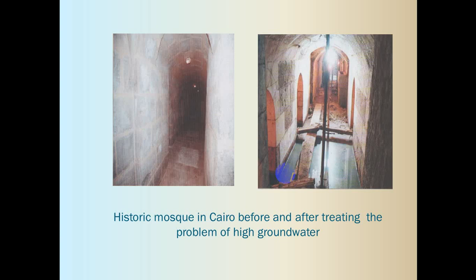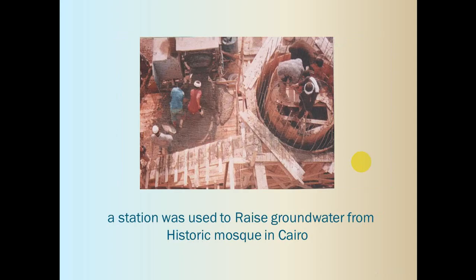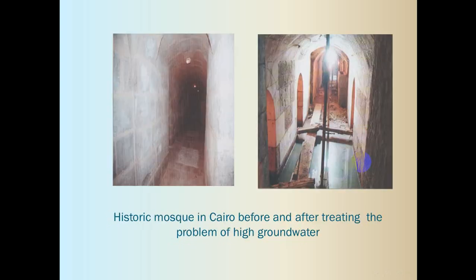Here this historical mosque was suffering from high groundwater inside it — you can see how the groundwater was covering parts of the building's floor. They performed a groundwater pumping operation to the outside, pumping it to an external well. A station was used to raise groundwater from a historic mosque in Cairo. After treating, the building became completely free of groundwater.